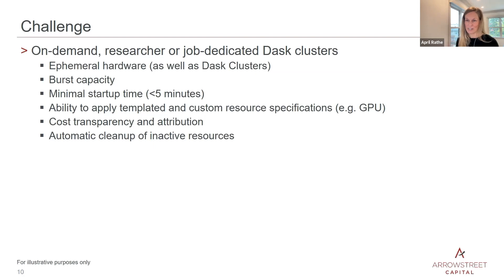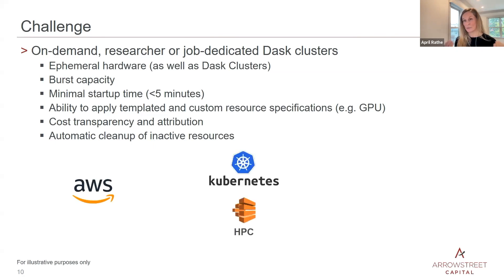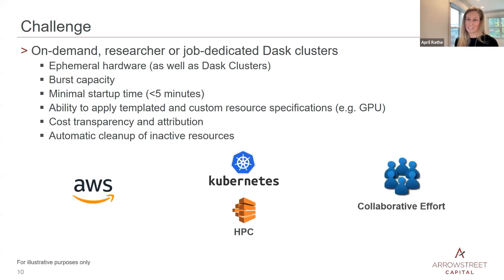We knew we would need to use a cloud provider for burst capacity, and we went with AWS as it aligned with other efforts we had underway. We knew we would need a resource manager, so we looked at both Kubernetes and HPC. Most importantly, we knew this would have to be a collaborative effort — not something we could do just within research or the QuantDev team. We needed help from our central infrastructure, cloud infrastructure, and research systems teams.